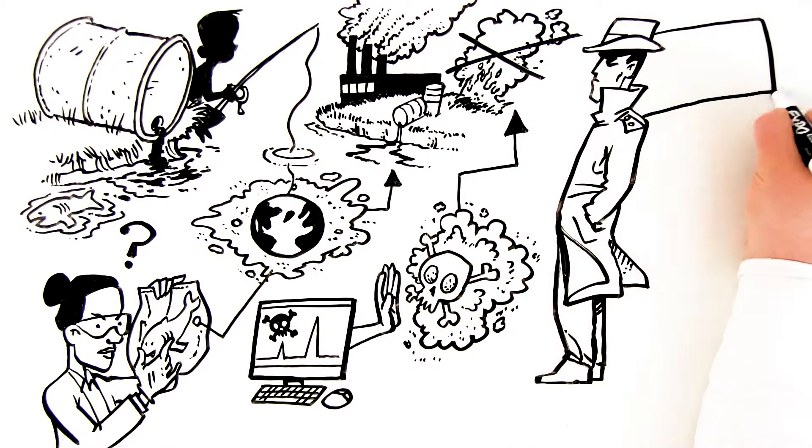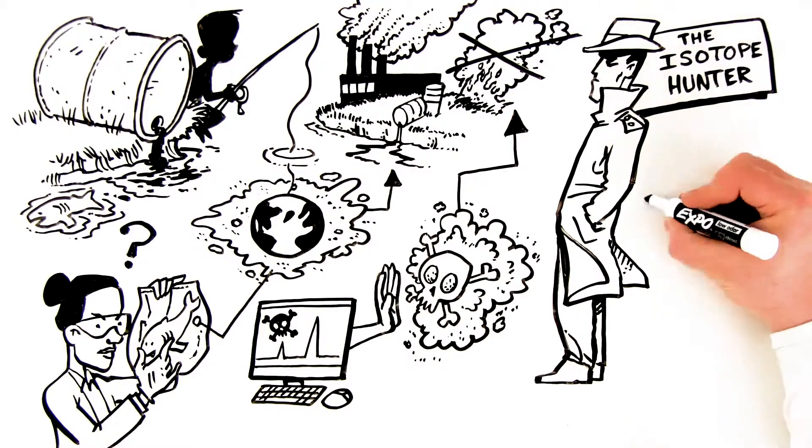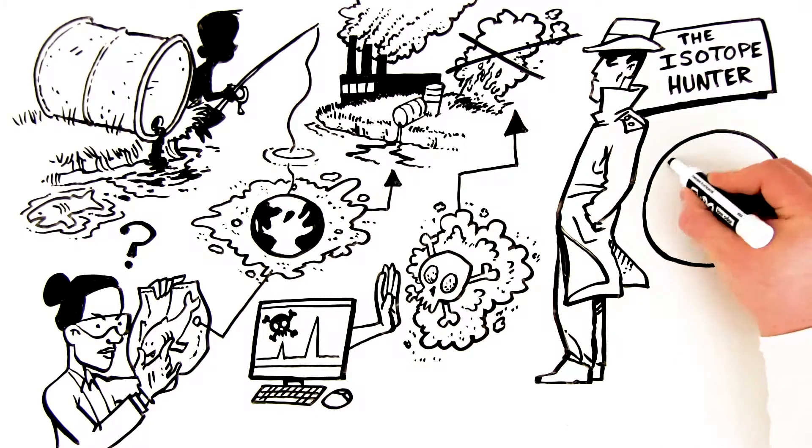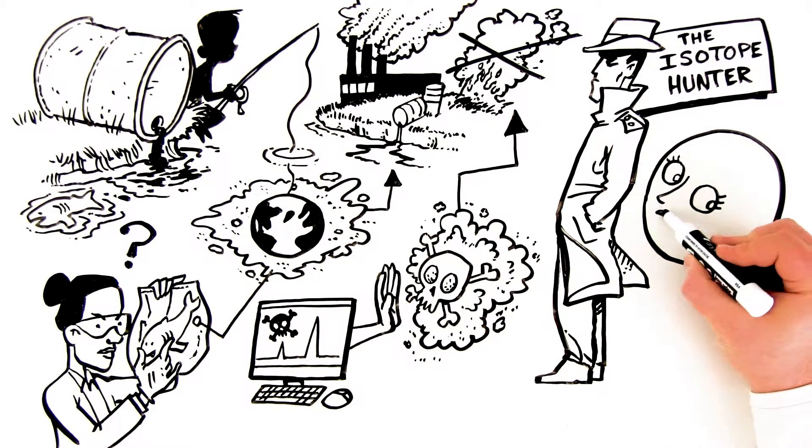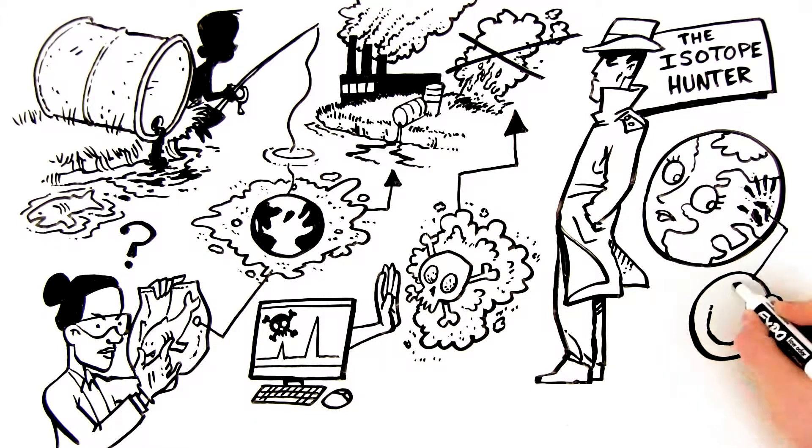All you need is a little help from the isotope hunter. Our environmental superhero is on a mission to help you make the world cleaner and healthier. Turns out, pollutants in our air, water, and on our land have fingerprints,